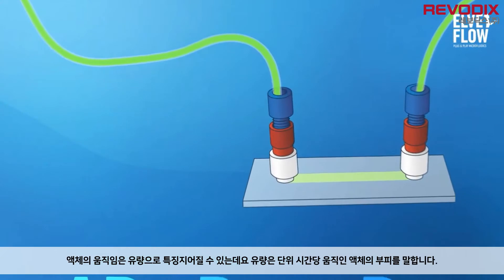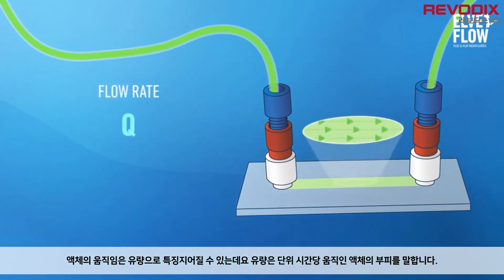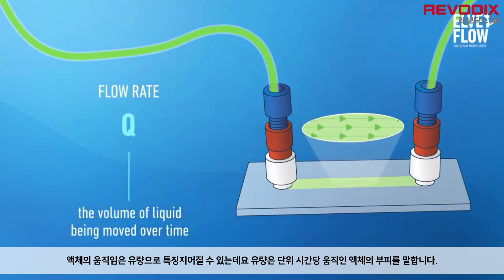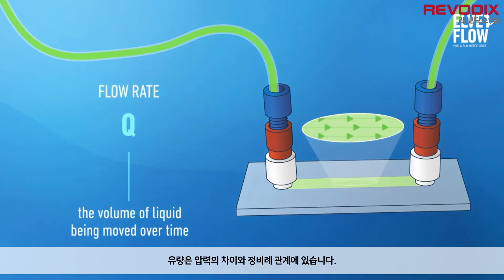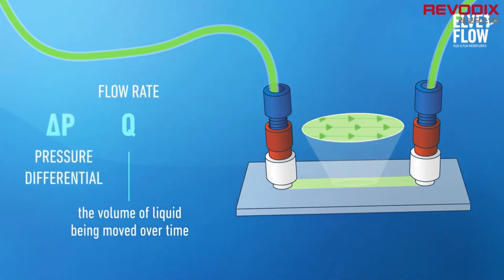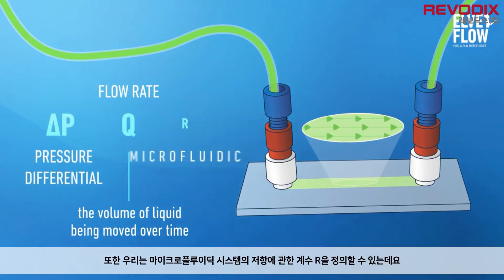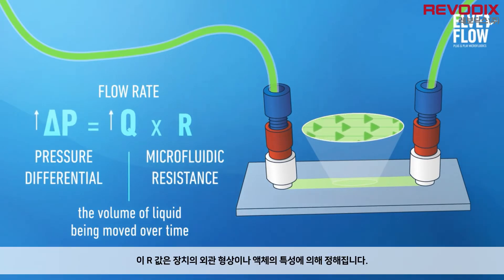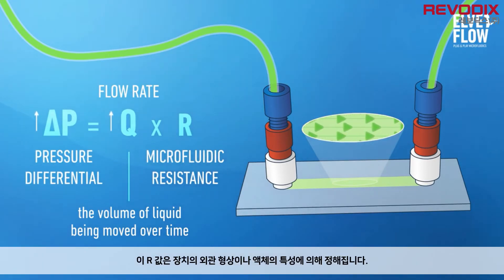The motion of a liquid is characterized by the flow rate, which is the volume of liquid being moved over time. The flow rate is proportionally related to the difference of pressure. We call microfluidic resistance the proportionality coefficient R. This characteristic of the fluidic system depends on device geometry and on liquid properties.